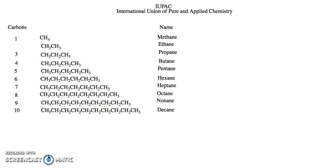The IUPAC system is based on having a series of designators for different chain lengths. Based on the size of the chain, each compound has a different name. Some are familiar — the 10-carbon chain is decane, the 9-carbon is nonane, the 8-carbon is octane. Others are newer, like methane for one carbon and ethane for two carbons.